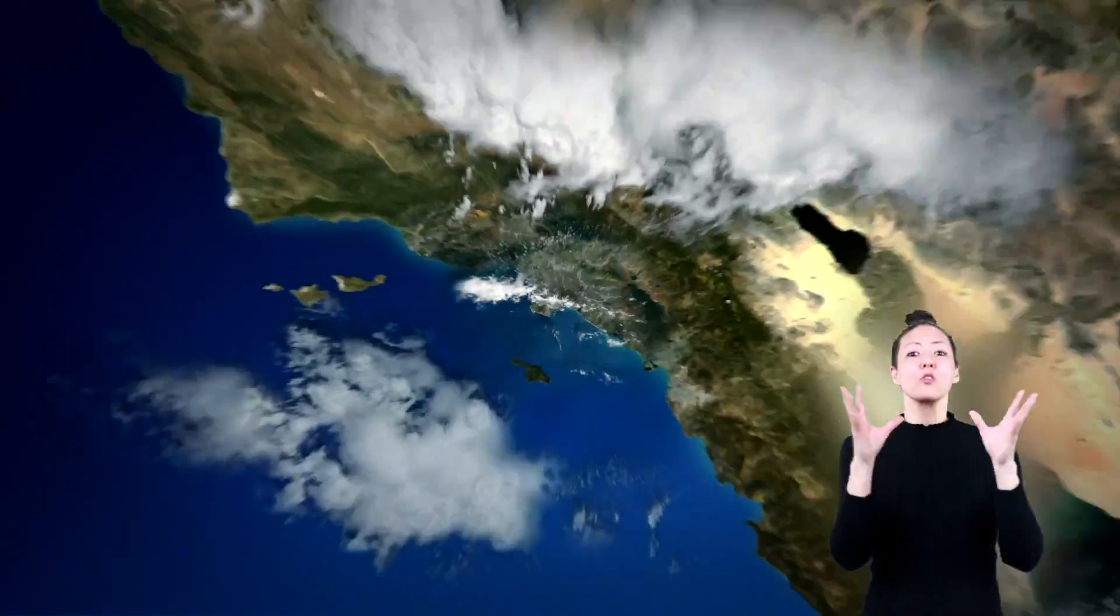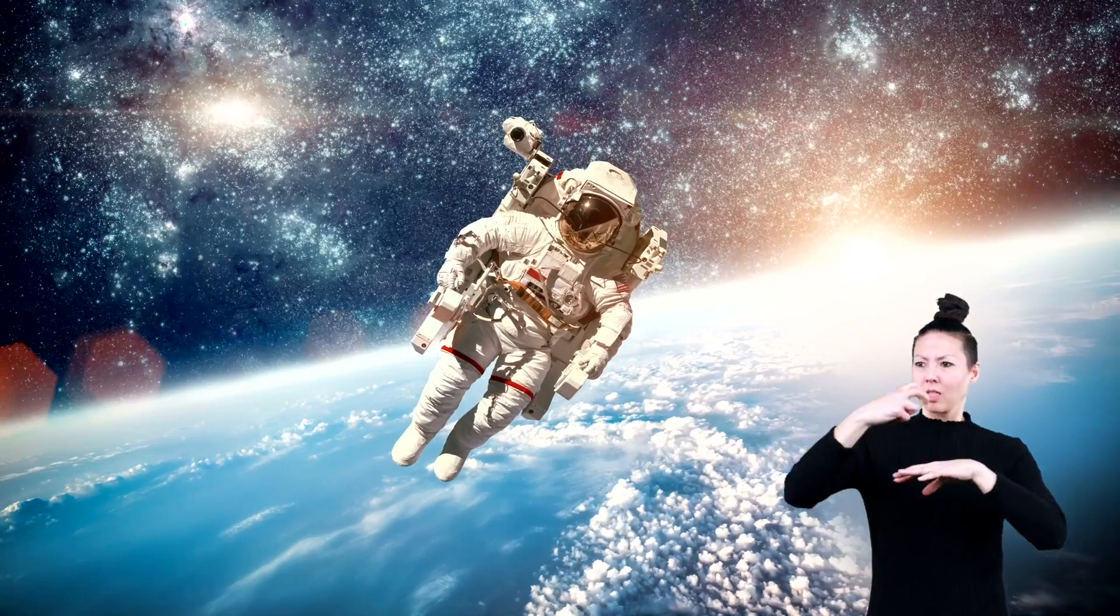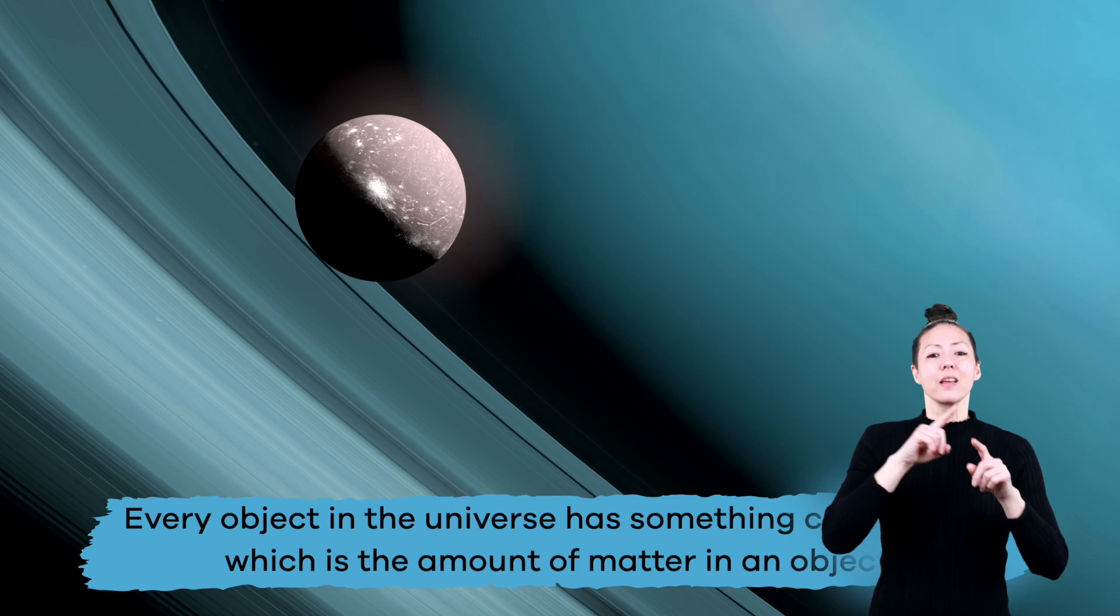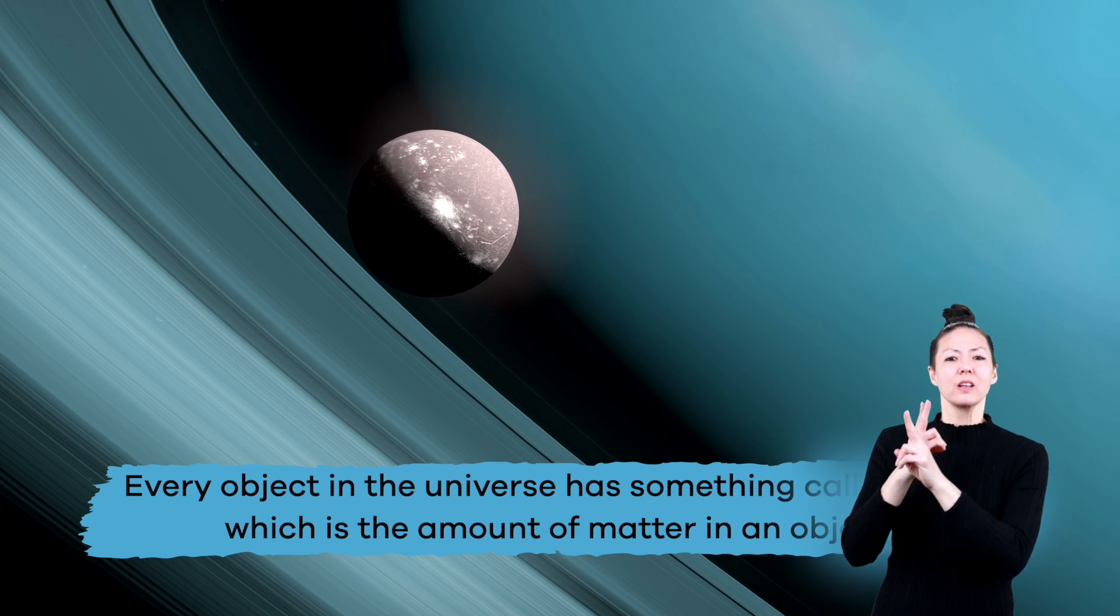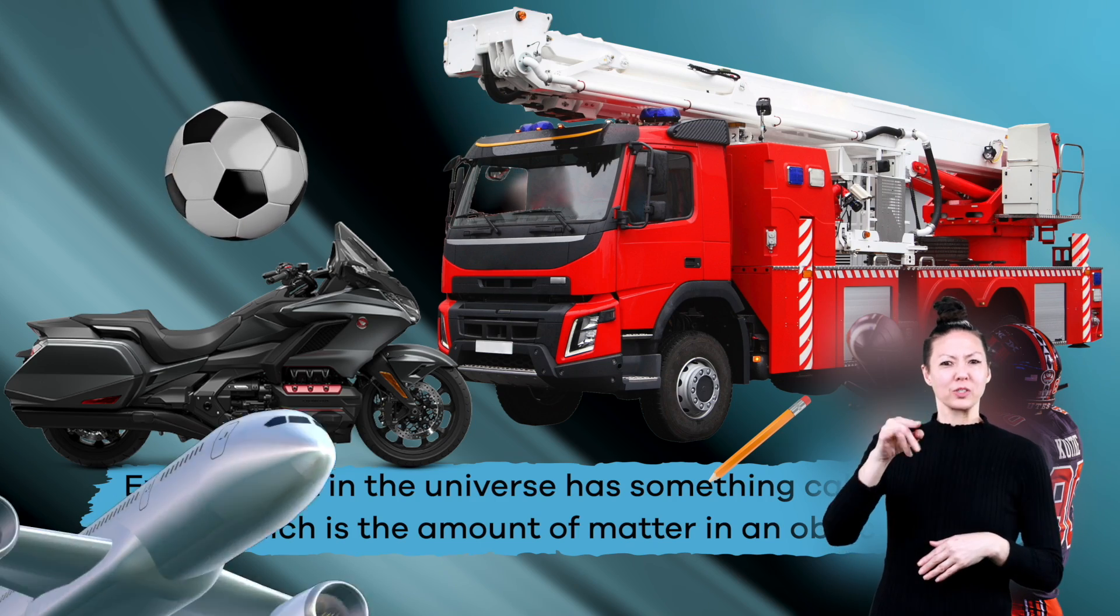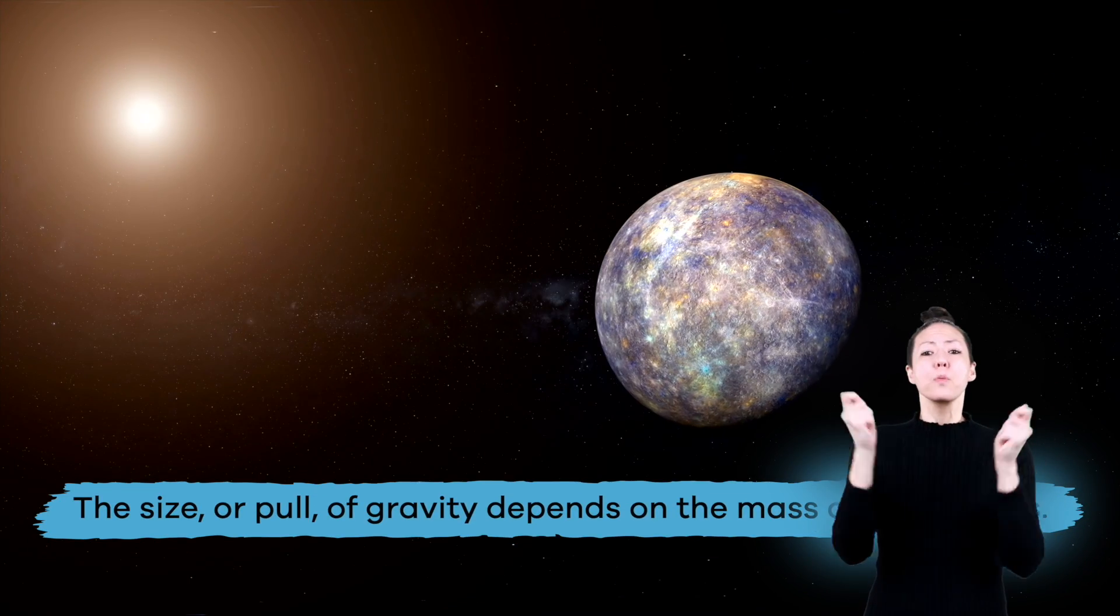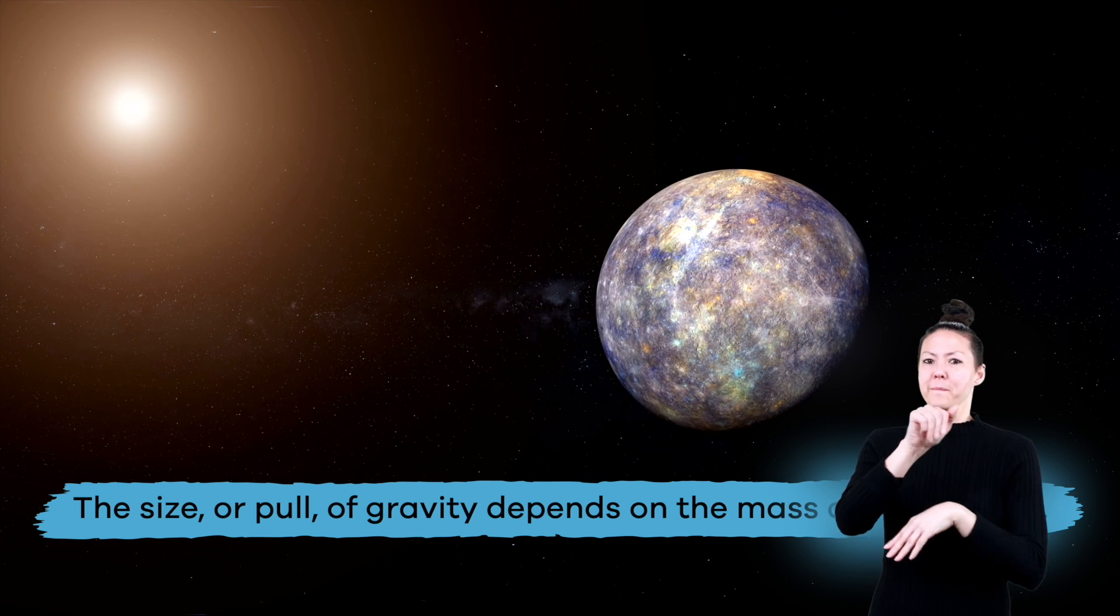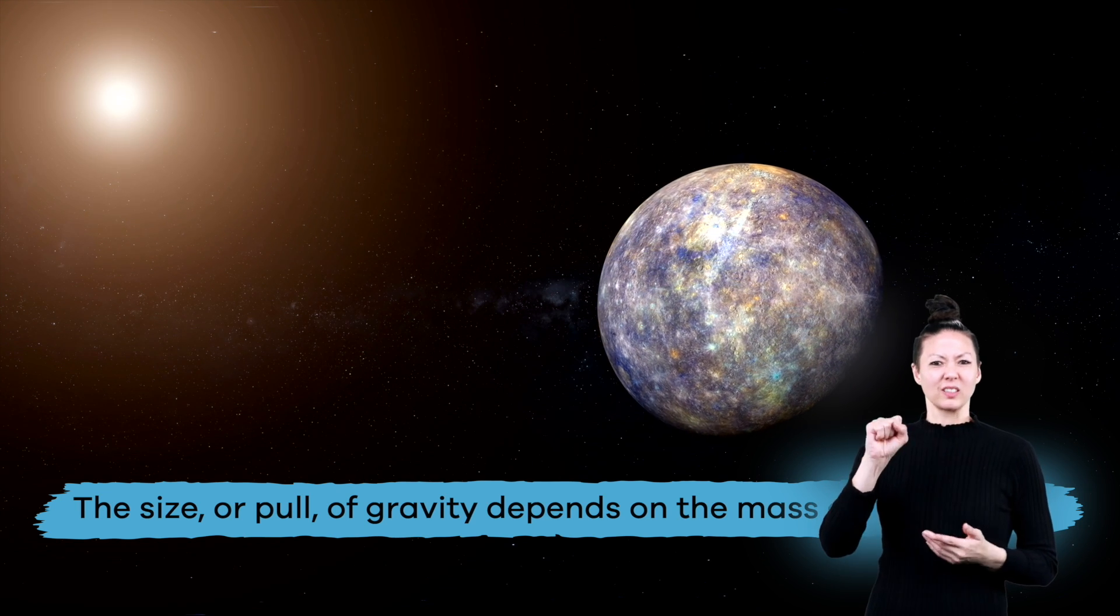Without gravity, you would literally float off into space. Every object in the universe has something called mass, which is the amount of matter in an object. The size, or pull, of gravity depends on the mass of the objects.